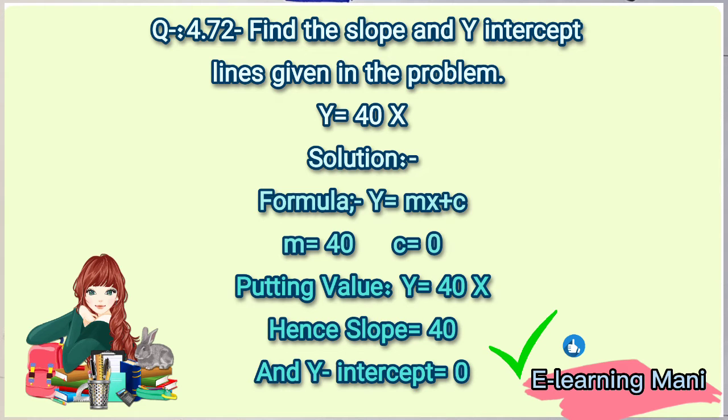Assalamu alaikum, here is Mani from E-Learning Point. Today's video is about first year subject Business Mathematics for first year Commerce, Chapter 4: Functions and Their Graph. So let's start Question Number 4.72: Find the slope and y-intercept lines.